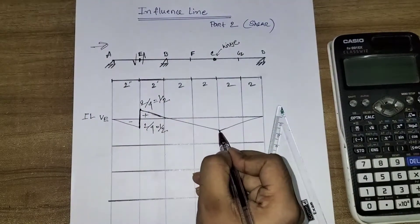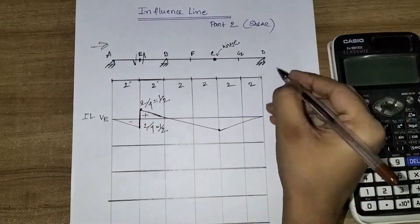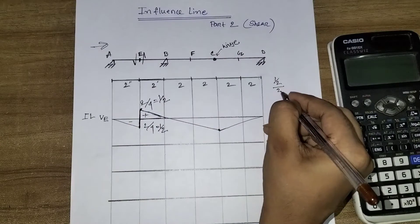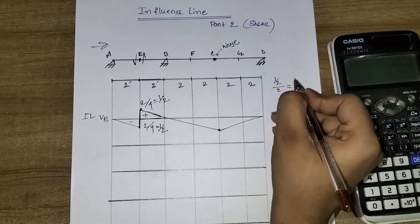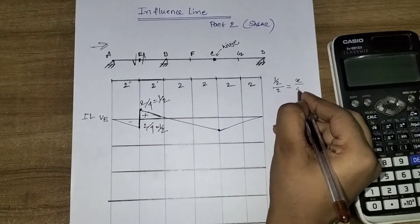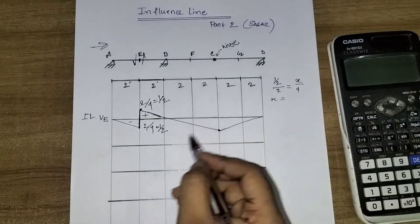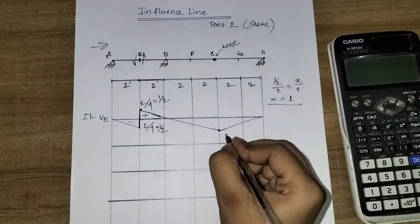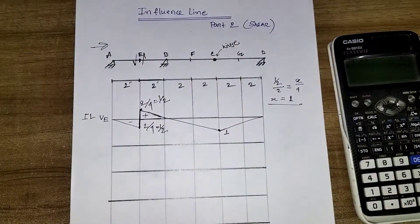Using similar triangles - point A divides the distance. The ratio is 2 over the total distance, which is 4. So X is equal to 1. Now I'll proceed to the next step.